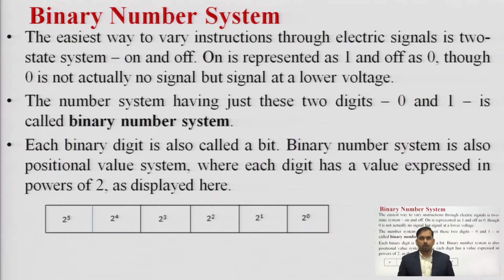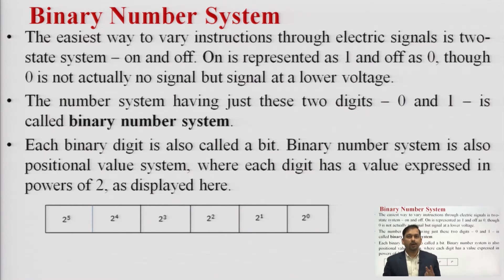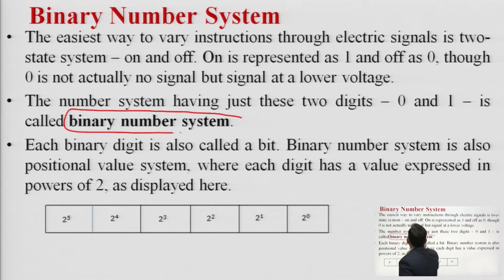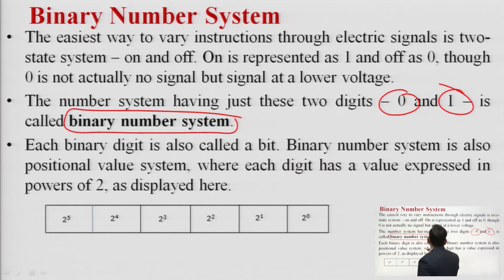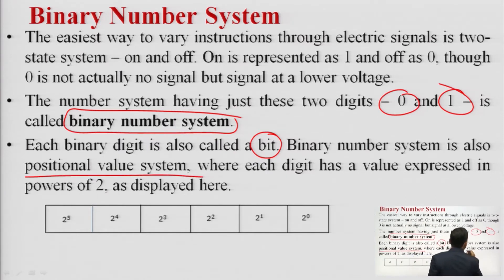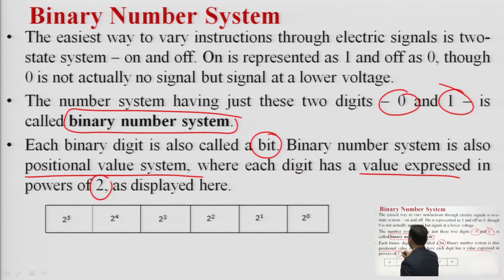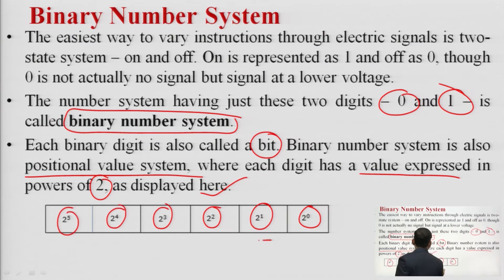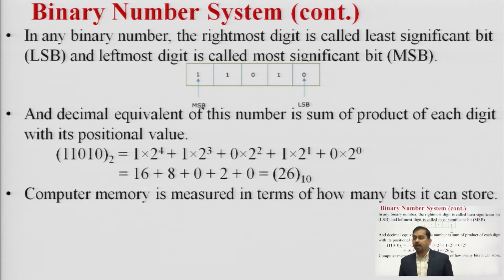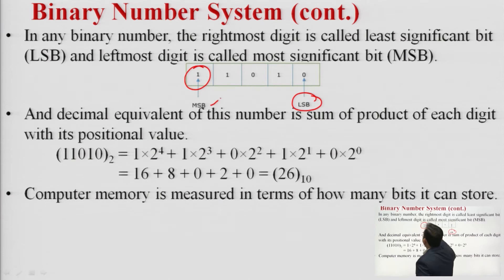Now we have the binary number system. The base is 2, so only 2 digits are allowed: 0 and 1. Each binary digit is also called a bit. Binary number system is also a positional value system where each digit has a value expressed as a power of 2: 2⁰, 2¹, 2², and so on. For a number 1 1 0 1 0, the rightmost digit is LSB (least significant bit) and the leftmost 1 is MSB (most significant bit).